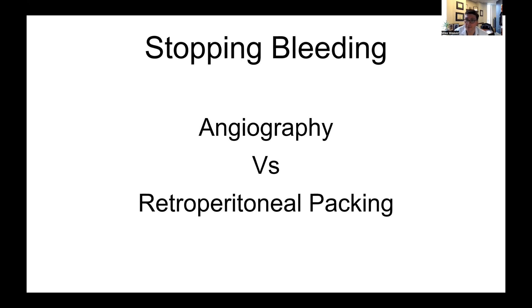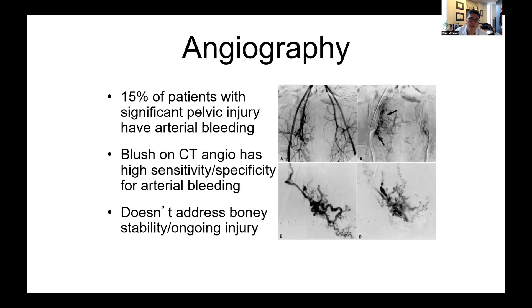Stopping the bleeding is critical. Here in the States, there are two ways: angiography and retroperitoneal packing. Angiography is probably the standard — 15% of patients have direct arterial bleeding on angiography in bad pelvic fractures, and that can be directly controlled with coiling. Even if it's just venous bleeding, you can use gel foam to knock out the bilateral internal iliacs, which lasts 24 to 48 hours before it recannulizes — during that time the bleeding is really controlled. We call that damage control angiography, and most centers in the United States use it as their primary hemorrhage control in bad pelvic fractures.